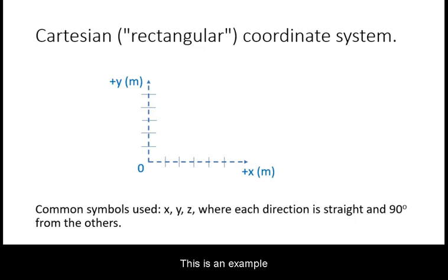This is an example of a Cartesian coordinate system. This is also referred to as a rectangular coordinate system. In Cartesian coordinates, the symbols often used are x and y for two-dimensional problems, as well as z if the problem is three-dimensional.